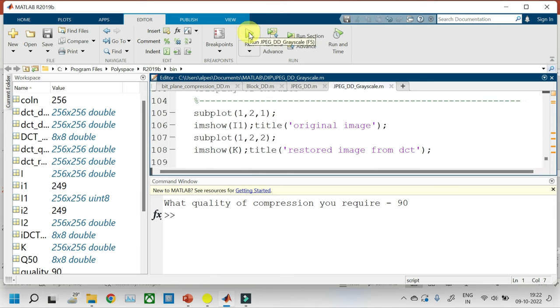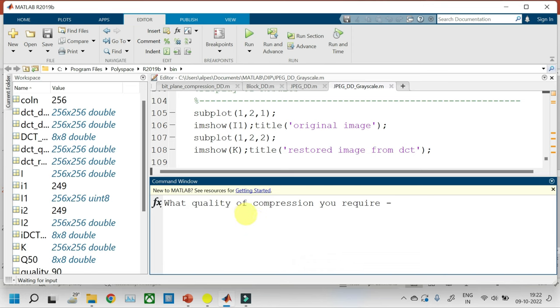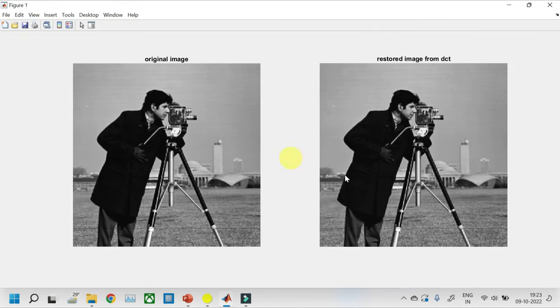Let us run the program and see the output. So, initially it asks what quality of compression you require. Say we require a high quality image. So, let us input 90 and you can see that we obtain a very high quality restored image from DCT. So, here the compression is very low.